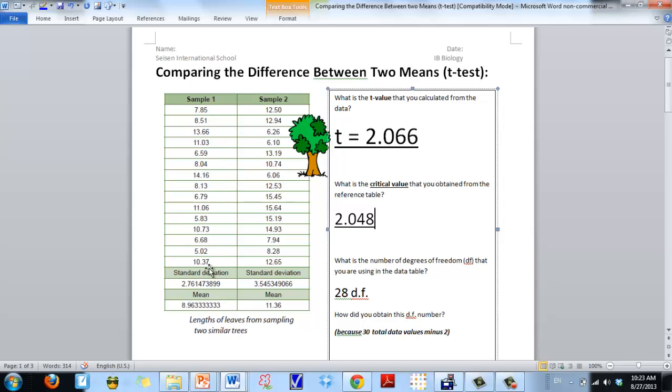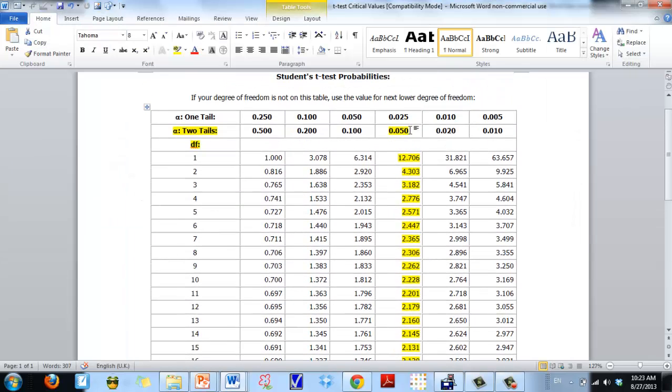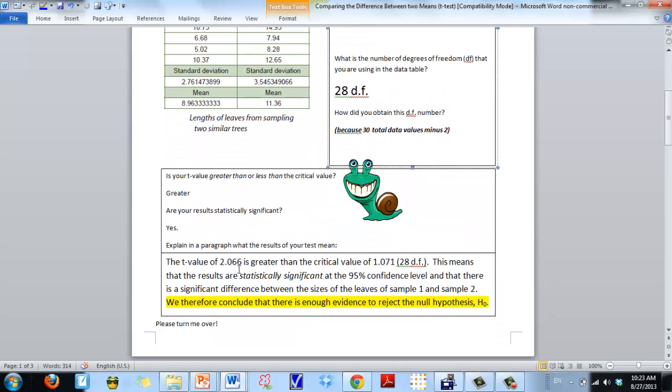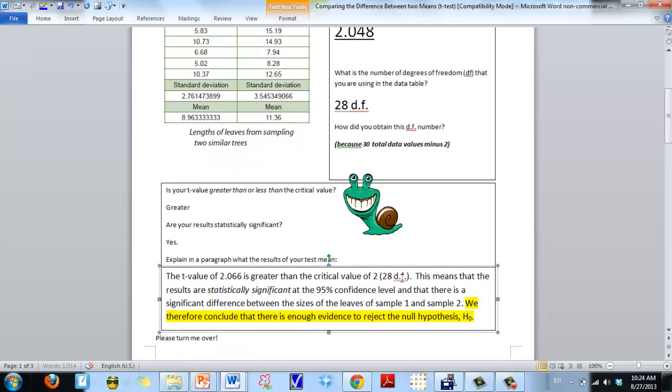It's not just that this number is larger, but when you actually compare all the data, the spread, how much they overlap, that the difference, there's enough difference, it can't just all be due to chance. And this is actually, since we're using this 95% confidence level, then we can write a long sentence that looks something like this. The T value of 2.066 is greater than the critical value of 2.048. This means that the results are statistically significant at the 95% confidence level. And that there is a significant difference between the sizes of the leaves of sample 1 and sample 2.